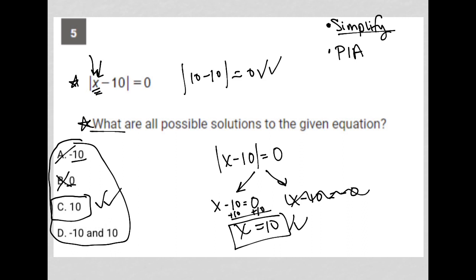Choice D is incorrect because it says negative 10 and positive 10. We know the positive 10 part is correct. The negative 10 part is not correct, and that's why choice D is altogether not correct. So this is the reason why choice C is the correct answer, and here are two strategies that will lead us to that solution.